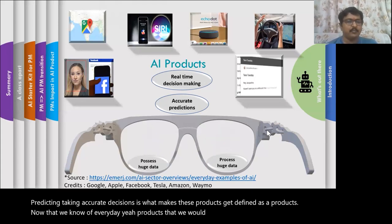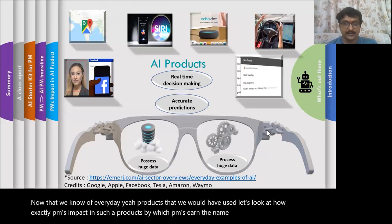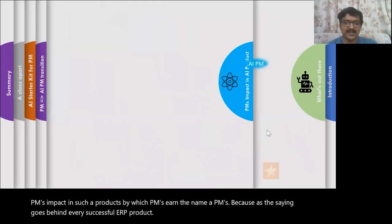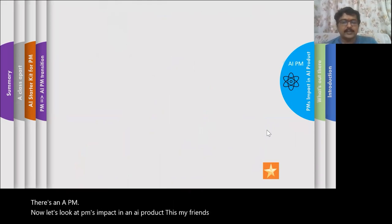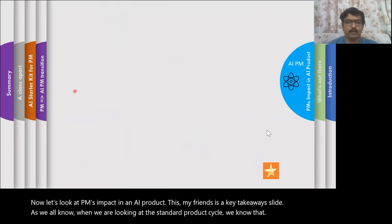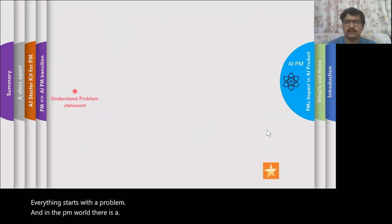Now that we know of everyday AI products, let's look at how exactly PMs impact such AI products, which is how PMs earn the name AI PMs. Because as the saying goes, behind every successful AI product there's an AI PM. As we all know, when looking at the standard product cycle, everything starts with a problem. And in the PM world there is a famous saying: problems are a PM's best friend. We always start with understanding the problem statement.